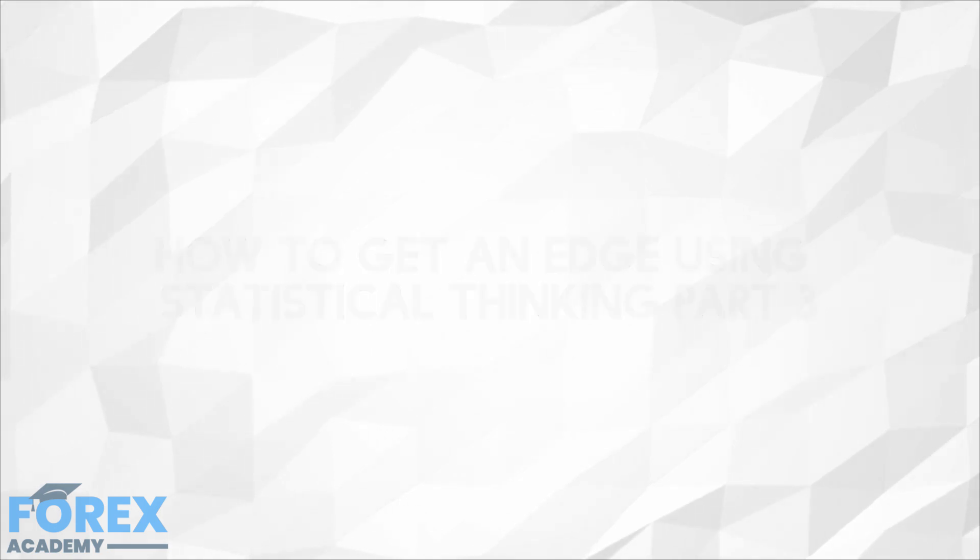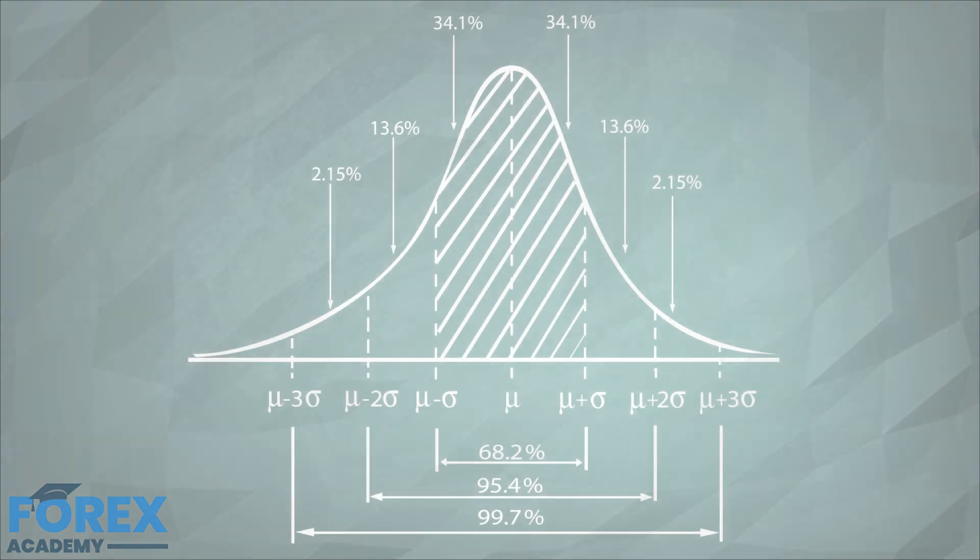Although all normal distributions have the same shape, each one has a different mean and standard deviation. We know that the area under the curve shows the probability of a new value falling within that area.